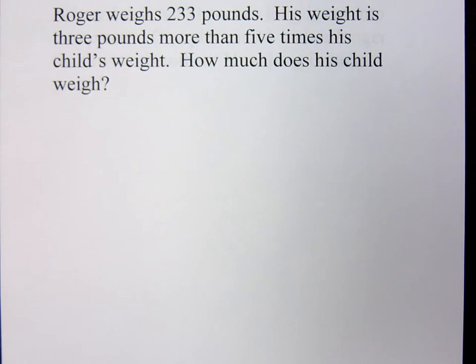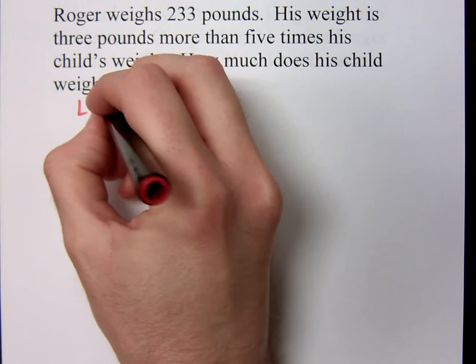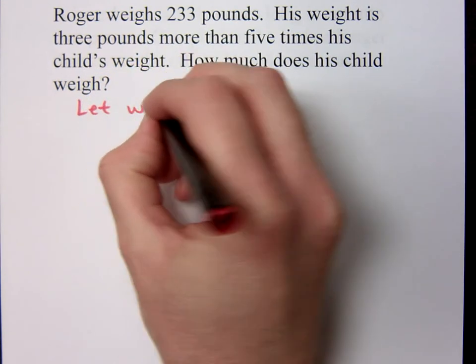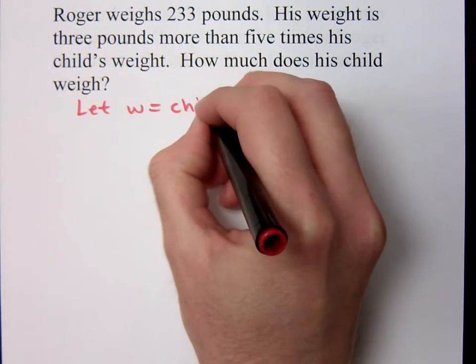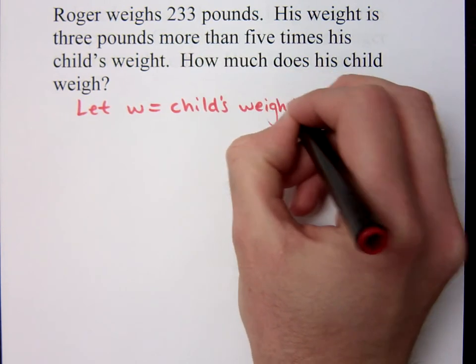What do we not know? What are we looking for? The child's weight. So you can say, let X equal the child's weight. You can use other letters if you want to. You could say, let W equal the child's weight. Some people may just always stick with X.